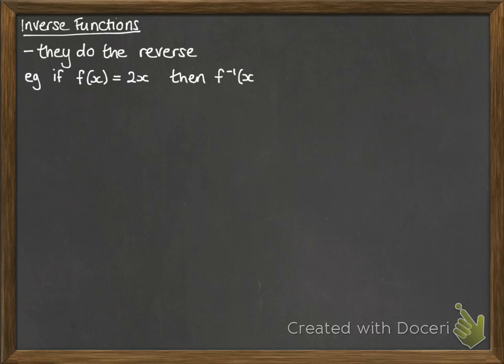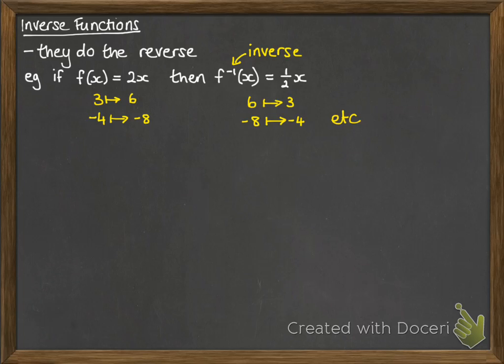If f(x) = 2x, then the inverse function, which we write as f⁻¹(x), would be x/2. We could put 3 into f(x), and it would map onto 6. So the inverse would have to do the opposite: 6 maps onto 3. We'll try another one. -4 would go to -8, so -8 has to go to -4 on the inverse, and so on.